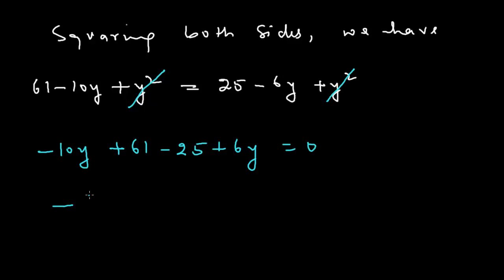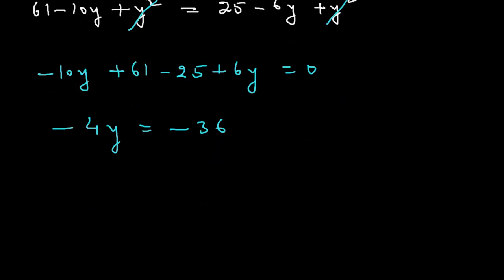This means -4y equals to -36. Finally, y will be equal to -36 over -4. This means positive 9. Therefore, y is equal to 9.